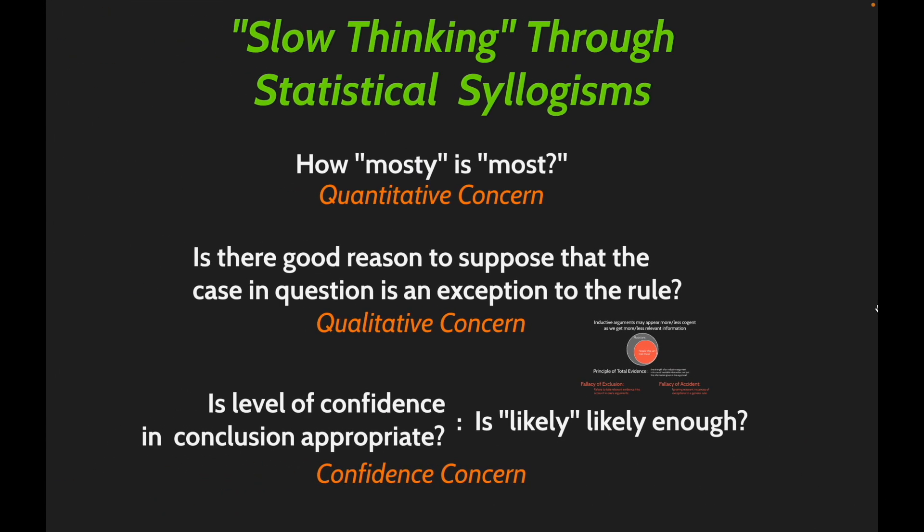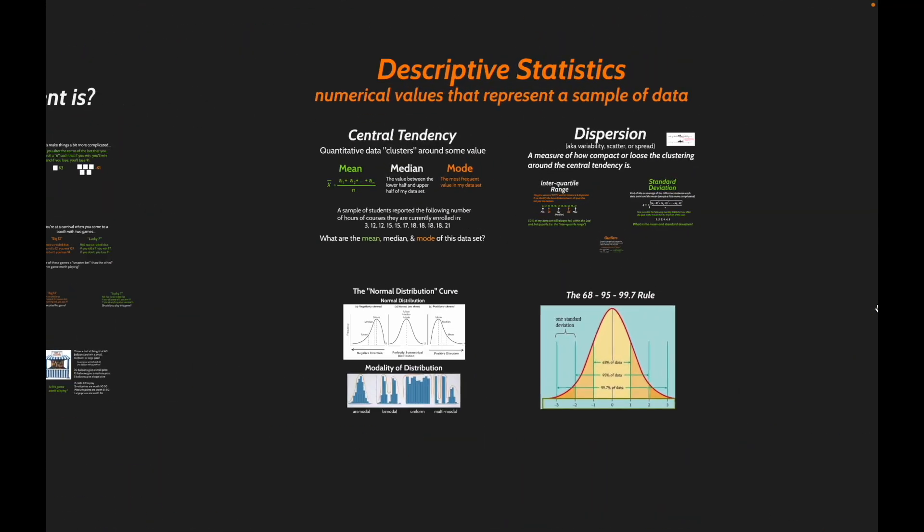There's more to say about the 'how mosty is most' question — that quantitative concern that pops up in any statistical syllogism. Sometimes we express the general rule as 'most A's are B's,' sometimes as 'a typical A is a B,' or even 'the average A is a B.' We can tighten up this analysis by looking at actual statistics — the way we represent a large group by substituting a number or group of numbers for that whole group. The formal methods for this are known as descriptive statistics: how we assign numerical values to represent a sample of data.